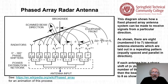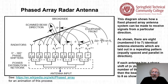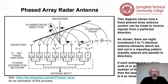A phased array radar antenna diagram shows how a fixed array can receive signals from a particular direction. There are eight antenna elements numbered zero to seven, equally spaced in a repeating parallel pattern. If each antenna has a phase shift of n times delta phi, where n is the element number, then the beam direction equals theta. There's a Wikipedia link with an animation showing this process. With a two-dimensional antenna having both vertical and horizontal elements, scanning can be done in two dimensions.